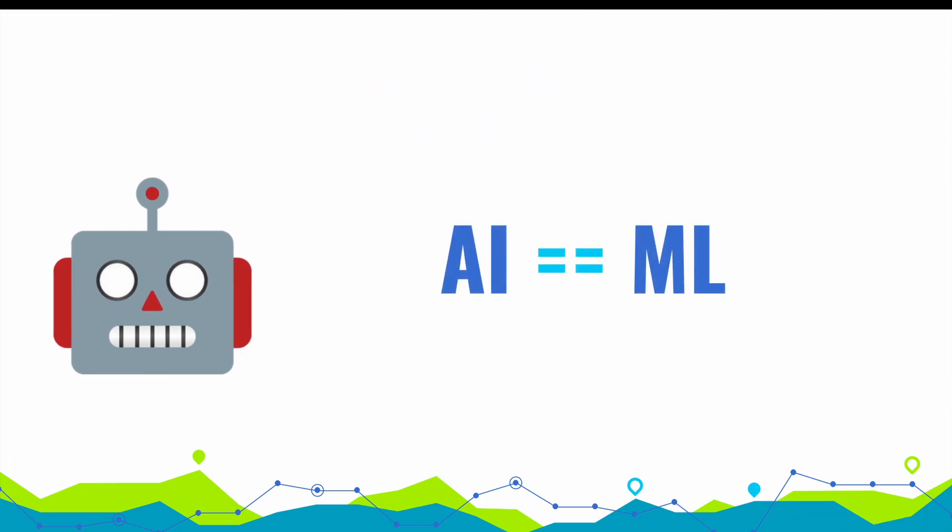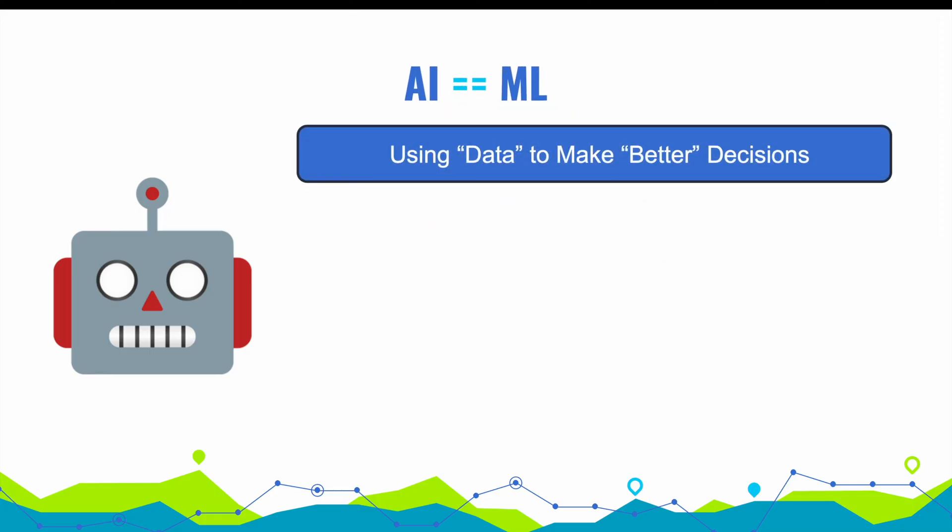In short, almost all modern AI, the stuff people are mostly referring to today, is pretty much using something called machine learning or also called ML. AI works, and what I really mean is how ML works, by using data to make better decisions.